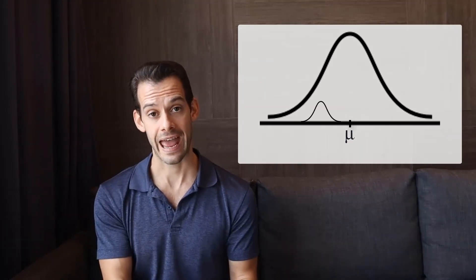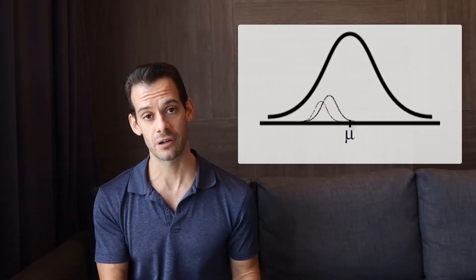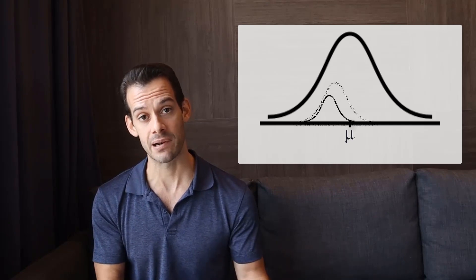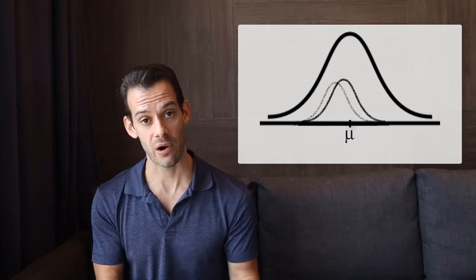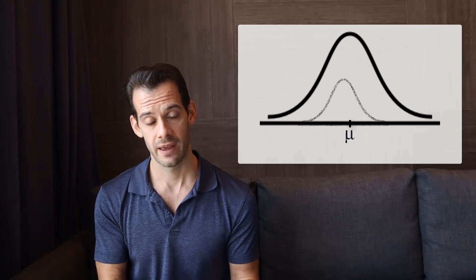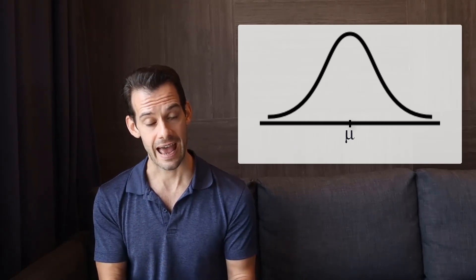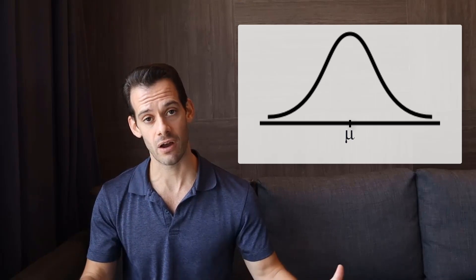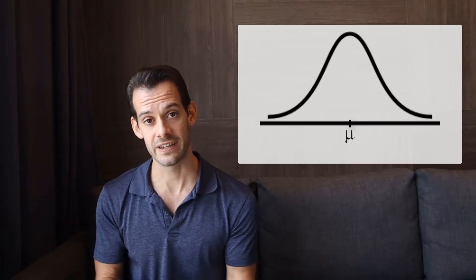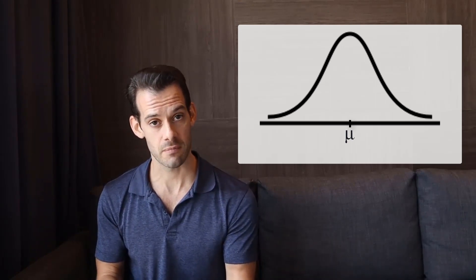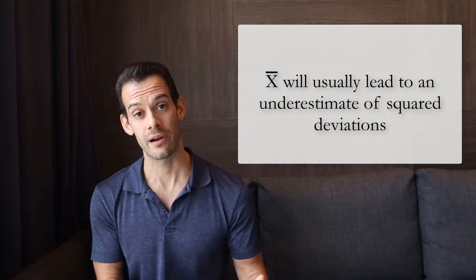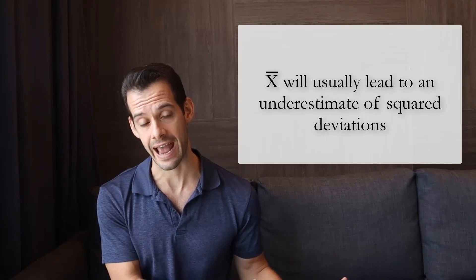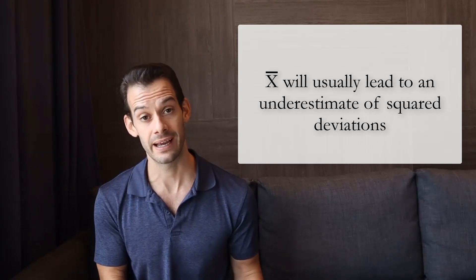We can also note that as our sample size gets larger and larger, x-bar will be a better and better approximation of mu — it gets closer and closer to mu. And what this means is that as our sample size gets larger, our underestimate of the deviations will get smaller and smaller. So now we have the reasoning for why our sum of squared deviations using x-bar is probably going to be an underestimate, and we can start thinking about how to adjust for that.